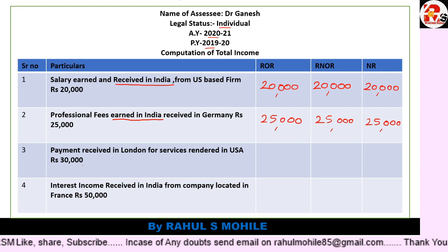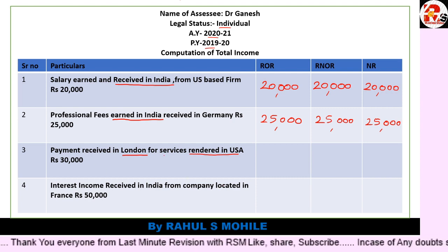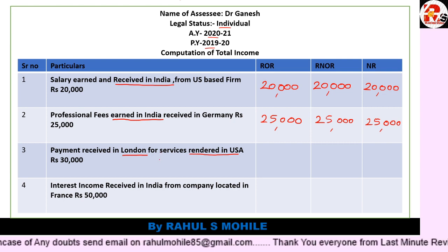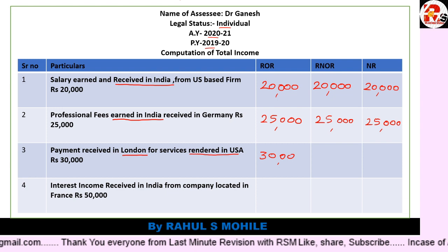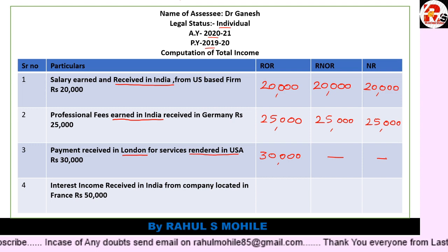Next point: payment received in London for services rendered in USA. London is a foreign country, USA is a foreign country — India is not mentioned anywhere in this sentence. So this is foreign income with no connection to India. As I explained, if it is foreign income and controlling is not from India, write it in only the first category — ROR only. So ₹30,000 goes in ROR column, and dash in RNOR and NR.